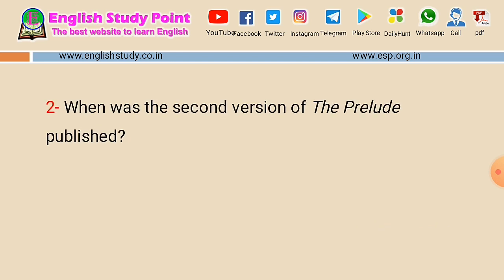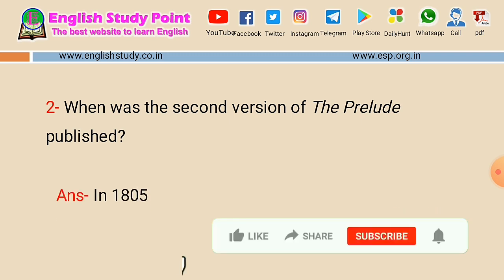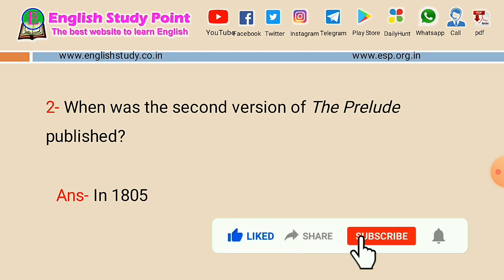Question number two: when was the second version of the Prelude published? This is a different question — focus on the second version, not the first. The answer is 1805. The second version of the Prelude was published in 1805.